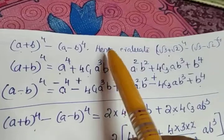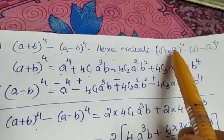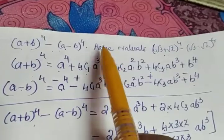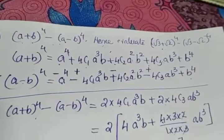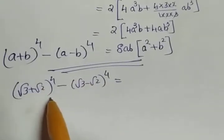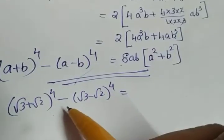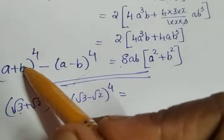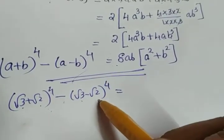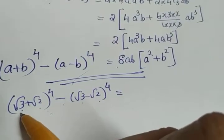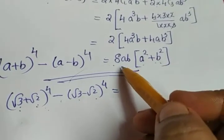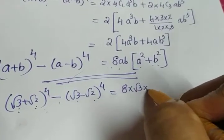Hence, evaluate. When there is the word 'hence,' we apply the first part to get the second part. The second part we need is (√3 + √2)⁴ − (√3 − √2)⁴. Comparing with our formula, instead of a we have √3, and instead of b we have √2. Everything else remains the same — the power 4 and the minus sign are the same. So on the right side, apply a = √3 and b = √2.